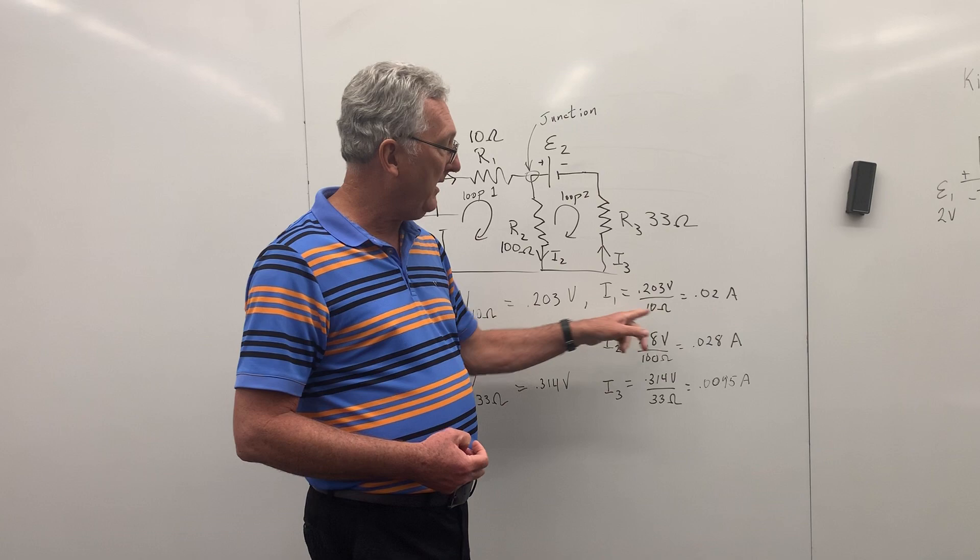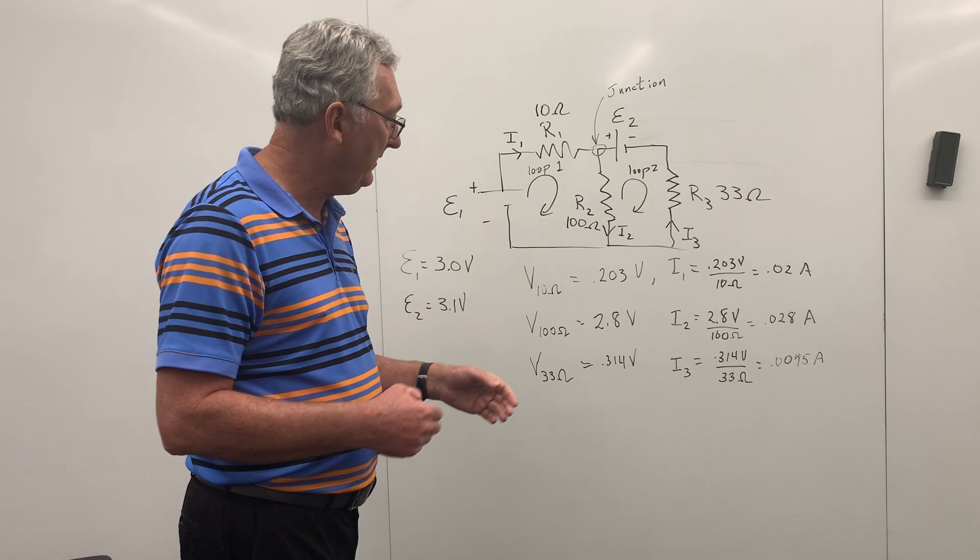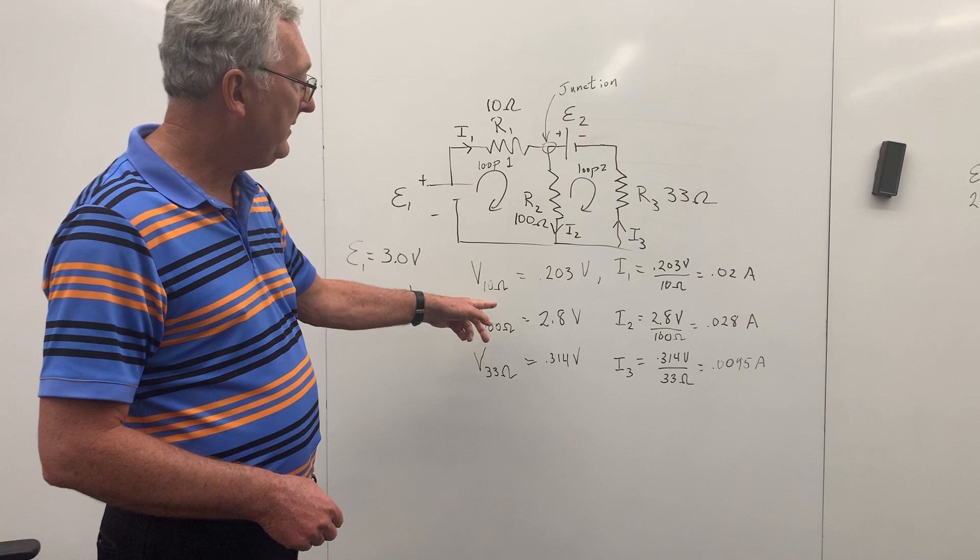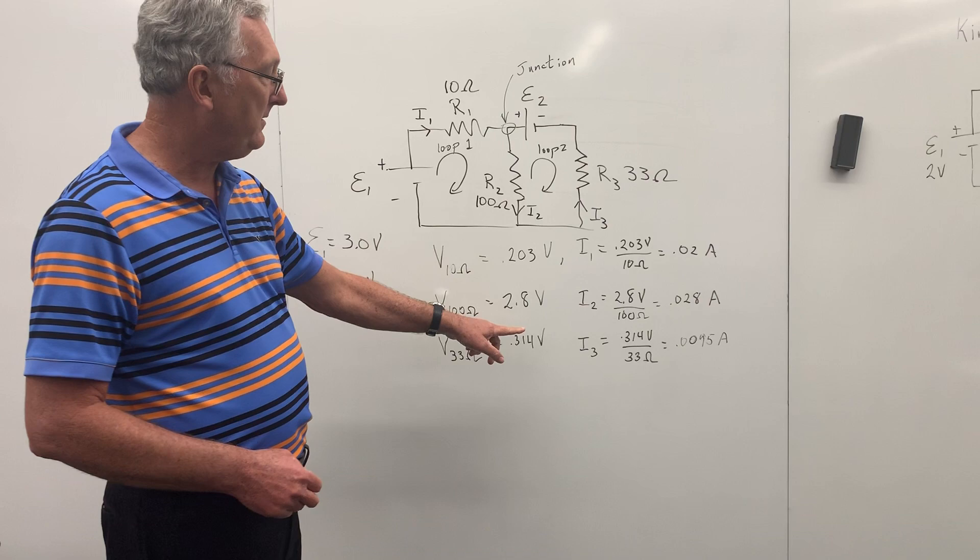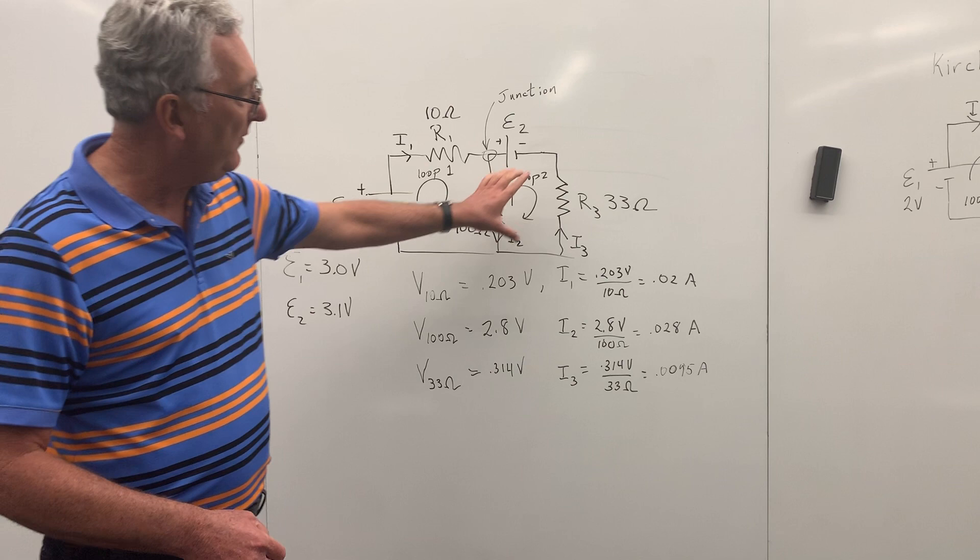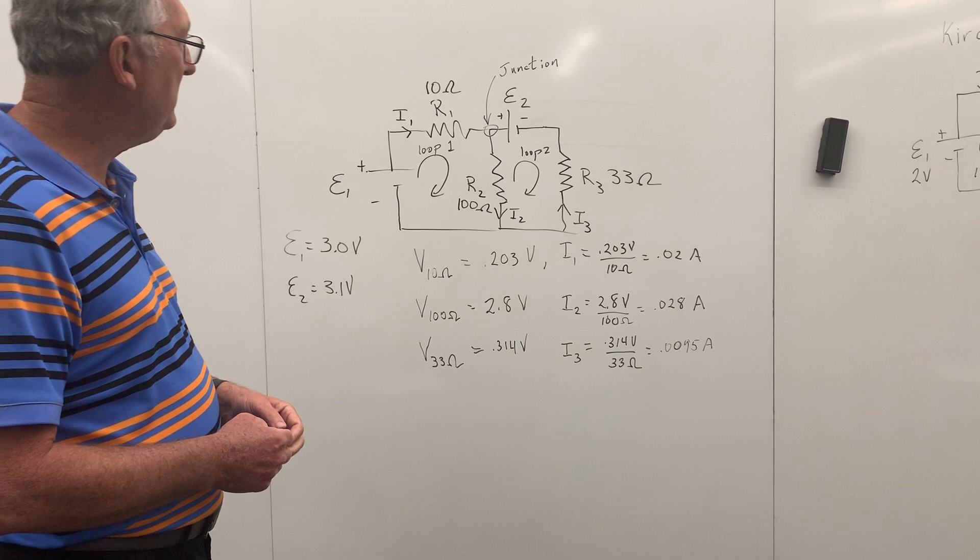Actually you're seeing how close we came to getting the right answers. So is I1 in fact 0.02 amps? Because you're going to have the actual value. This is the experimental value. Hopefully we did a good job doing these. Let me run down these for you. So the voltage drop across the 10 ohm was 0.203 volts. It's easy to calculate the current from that. We simply divide the 0.203 by 10 and get 0.02 amps. Voltage drop across the 100 ohm was 2.8 volts. And so dividing 2.8 by 100, again, pretty easy 0.028. And then the voltage drop across the 33 ohm was 0.314 volts. And so we got 0.0095 amps for the current there.